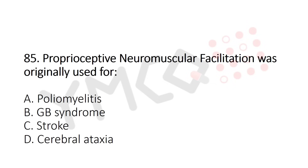Question 85: Proprioceptive neuromuscular facilitation was originally used for — option A: poliomyelitis, option B: Guillain-Barré syndrome, option C: stroke, option D: cerebral ataxia. The answer is option A: poliomyelitis.